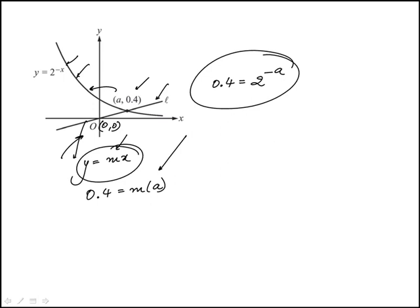So we have 2 to the minus a equals 0.4. This is 2 to the a if I take the inverse of both sides, which equals 2.5.